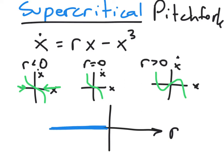Right when r equals zero, we're at a bifurcation, and it appears to actually still be stable in this case. Then when r becomes positive, we've transitioned to three fixed points. From below, we're increasing.